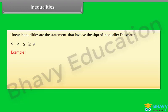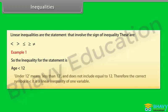Example 1: To enter a junior writing competition, you must be under 12 years old. So the inequality for the statement is: age is less than 12. Under 12 means less than 12, and does not include equal to 12. Therefore, the correct symbol is less than. It is a linear inequality of one variable.